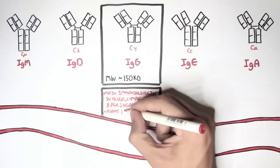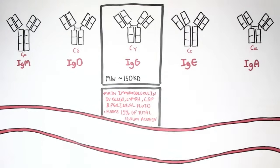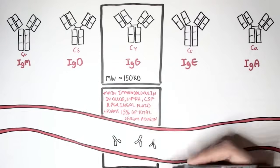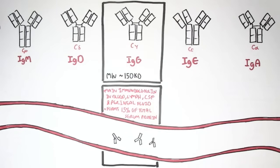and peritoneal fluid. It actually forms 15% of total serum proteins, which is a lot. And so they actually circulate in the blood as a monomer, as a single antibody. They are the most abundant and their half-life is about 23 days.